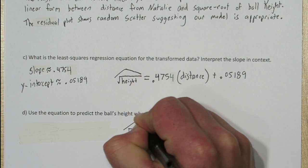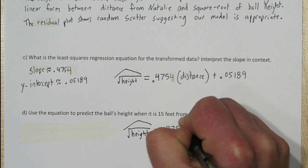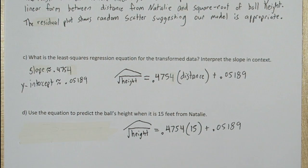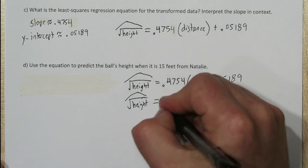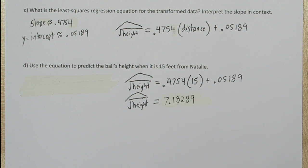If we substitute in a 15 for distance, we can predict the height when the ball is 15 feet from Natalie. So our predicted square root of the height is 0.718289.